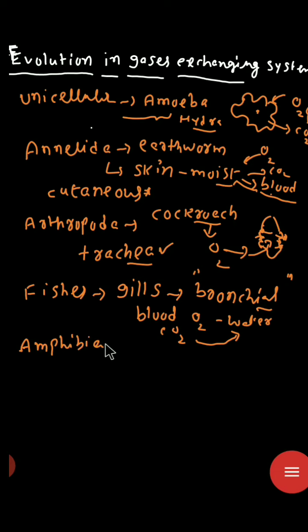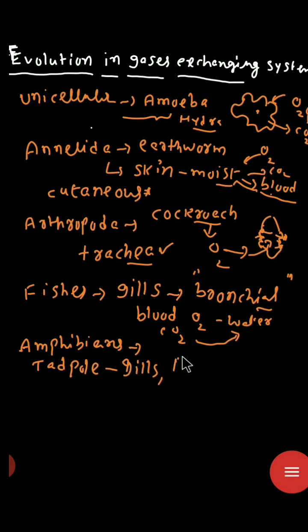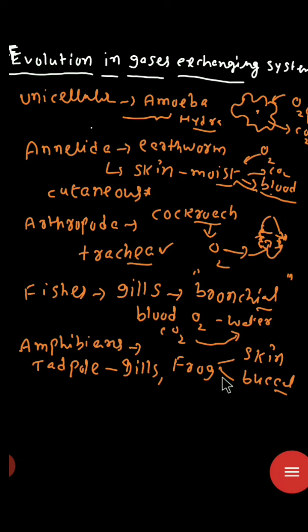Coming to the amphibians — frog-like animals — amphibians show respiration in different ways. The tadpole, the larval stage of the frog, respires with the help of the gills. The adult frog respires in three methods: with the help of the skin, the buccal cavity, and the lungs. So the adult frog shows cutaneous respiration, buccal cavity respiration, and pulmonary respiration, while the tadpole larval stage shows respiration through the gills.